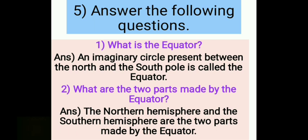Answer the following questions. What is the equator? An imaginary circle present between the North and the South Pole is called the equator. What are the two parts made by the equator? The Northern Hemisphere and the Southern Hemisphere are the two parts made by the equator.